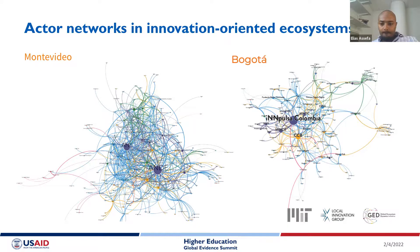Different ecosystems often share key actors and elements — an entrepreneurial ecosystem and an innovation ecosystem in a single location might share many of the same actors, rules, regulatory frameworks, and resources. What differentiates them is their purpose. The purpose of an entrepreneurial ecosystem is to facilitate startup and entrepreneurial activity; the purpose of an innovation ecosystem is to stimulate and support processes of innovation, whether through enterprise, policy, or existing systems like state health or education systems.